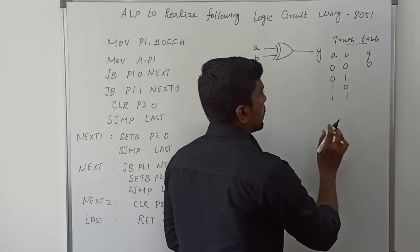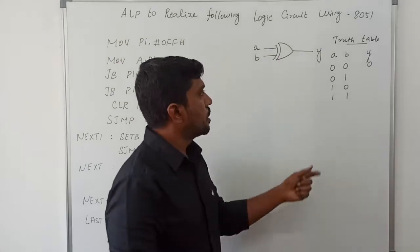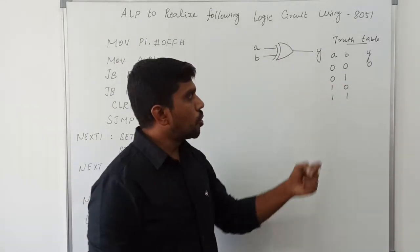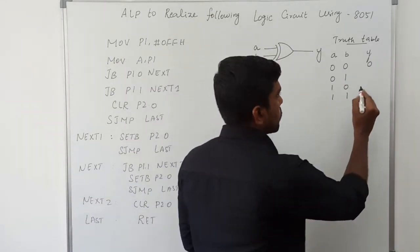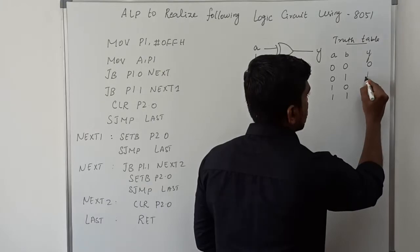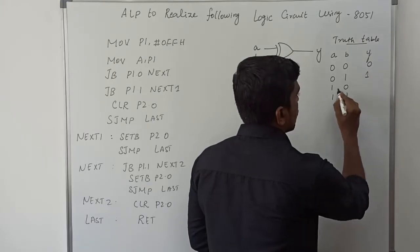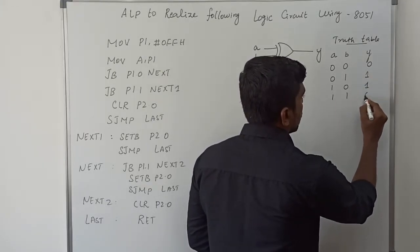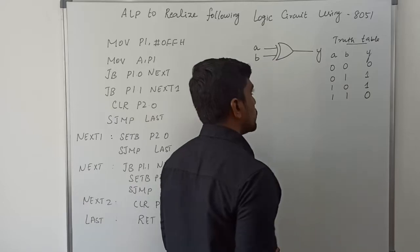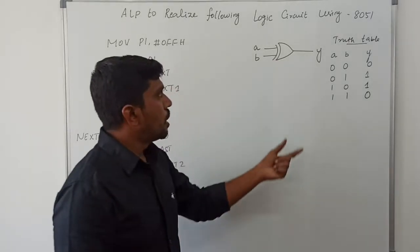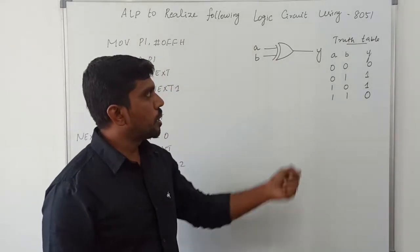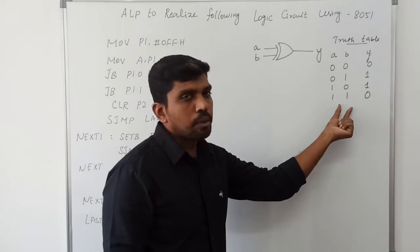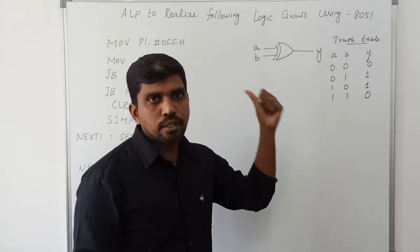The corresponding outputs: for input 0-0, output is 0. In the XOR gate, when both inputs are at different levels, output is 1. So 0-1 gives 1, 1-0 gives 1, and 1-1 gives 0. That is the truth table of the XOR gate.